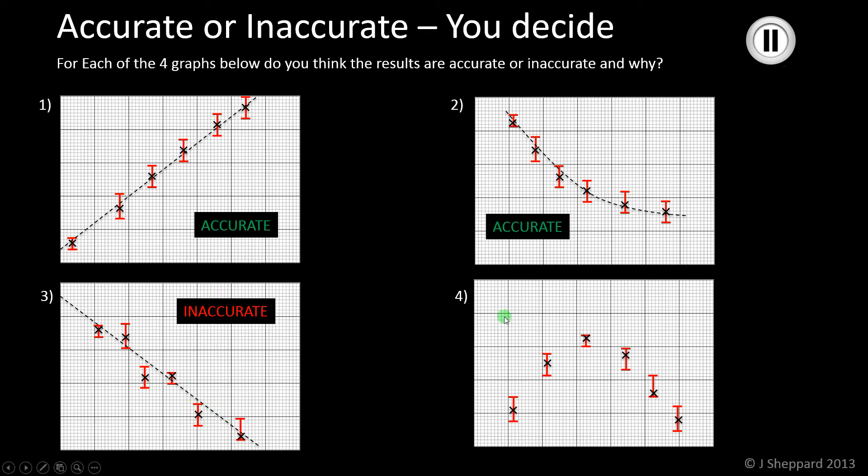And then number four, yes, it's an unusual trend, certainly, to go up and then down again, but it is still a smooth curve we can put through those points. So you would still say that those are accurate, even though the trend is slightly unusual.